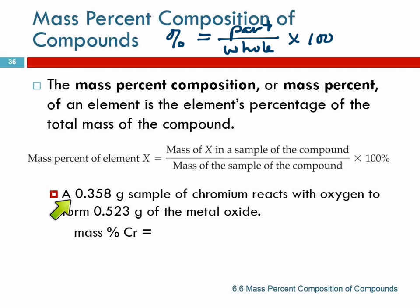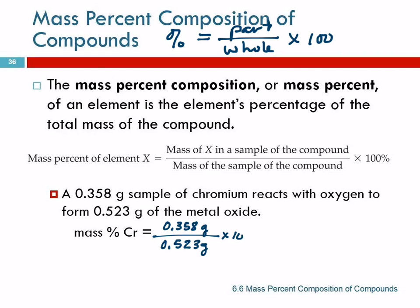So we've got the mass of the chromium, and we've got the mass of the compound. To find the mass percent of chromium, we take the mass of chromium — which is 0.358 grams — and we divide by the mass of the whole thing, 0.523 grams, then multiply by 100. So 0.358 divided by 0.523 times 100. This would have three significant figures, and I'm getting 68.5%.